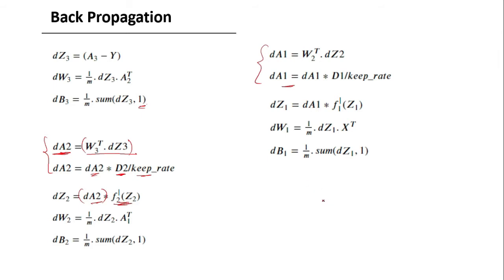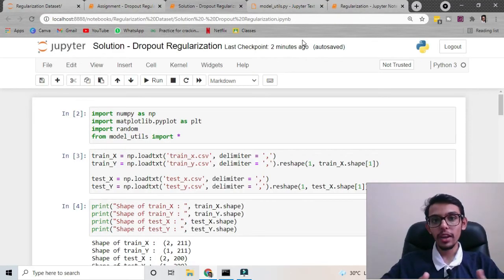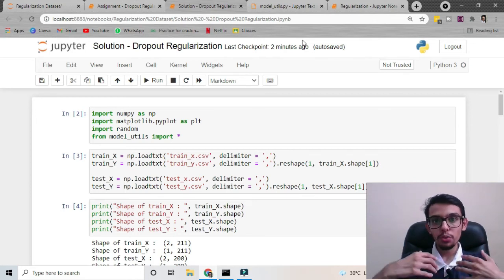Another important thing to note is that we only implement dropout while training the neural network — we do not implement dropout while making test predictions. So dropout is implemented during training but not during testing.